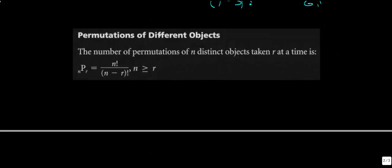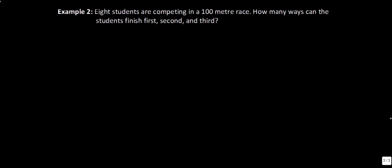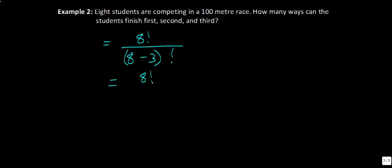In general, the number of permutations of n distinct objects taken r at a time is n factorial divided by n minus r factorial, written as nPr. For example two: eight students compete in a 100 meter race. How many ways can students finish first, second, or third? That's eight factorial divided by eight minus three factorial, or eight factorial over five factorial, which equals 336.